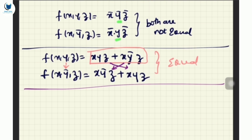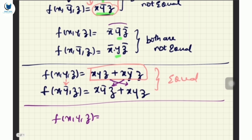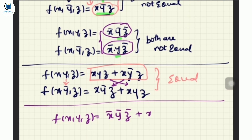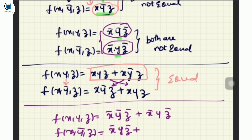Let's take one more case. Suppose f(x, y, z) = x_bar·y_bar·z_bar. This alone is not equal when y is replaced. So I combine: x_bar·y_bar·z_bar + x_bar·y·z_bar. Now replace y with y_bar — it becomes x_bar·y·z_bar + x_bar·y_bar·z_bar. Don't you think both are equal now? Again both are equal.